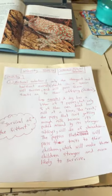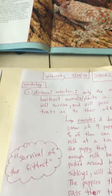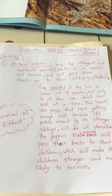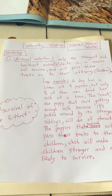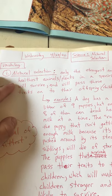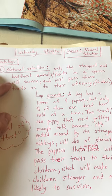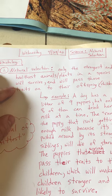So that's a review of yesterday — give yourself some snaps, I'm sure you worked hard on those. Today, Wednesday April 29th, we are learning about natural selection. Here's the vocabulary word: only the strongest and healthiest animals and plants in a species will survive and will pass those traits onto their offspring or children.